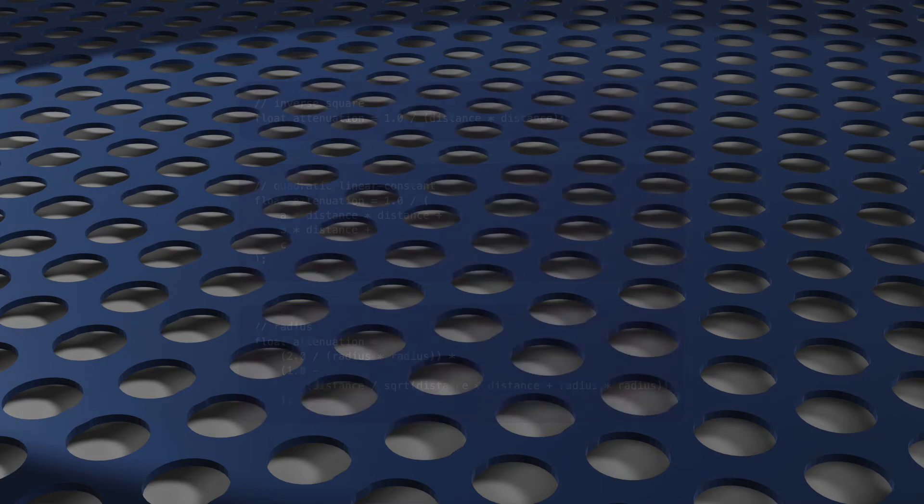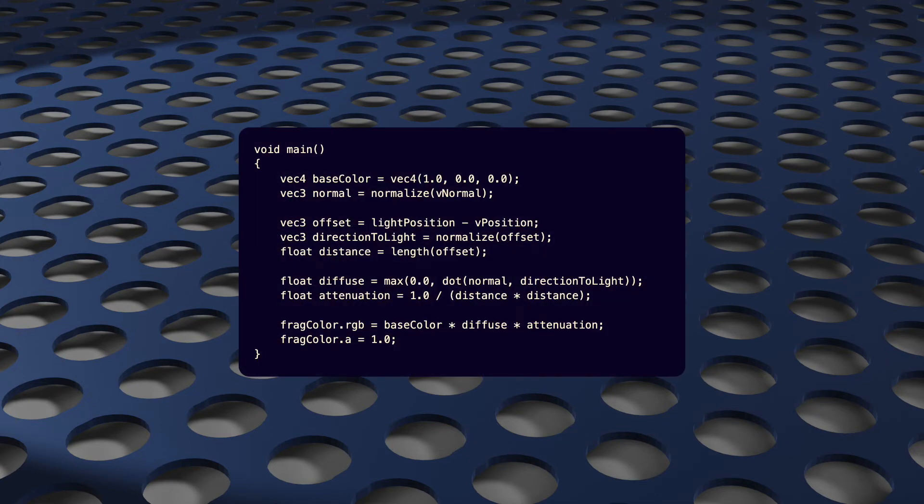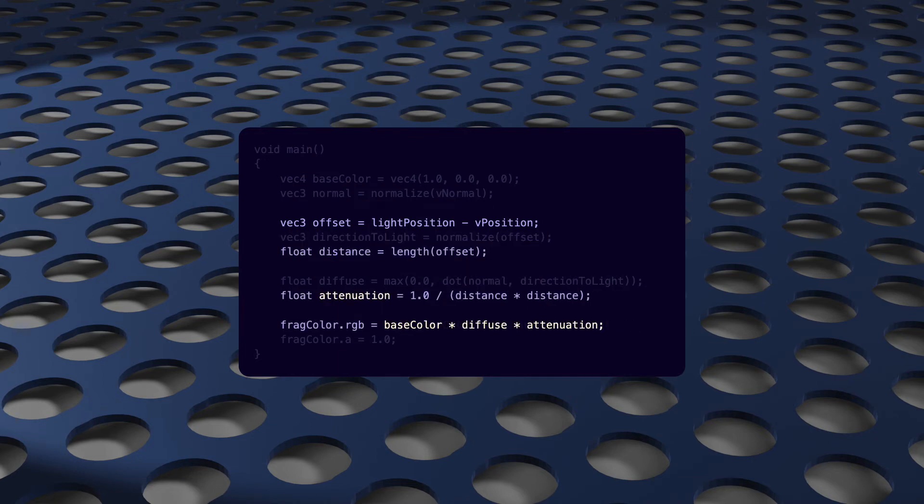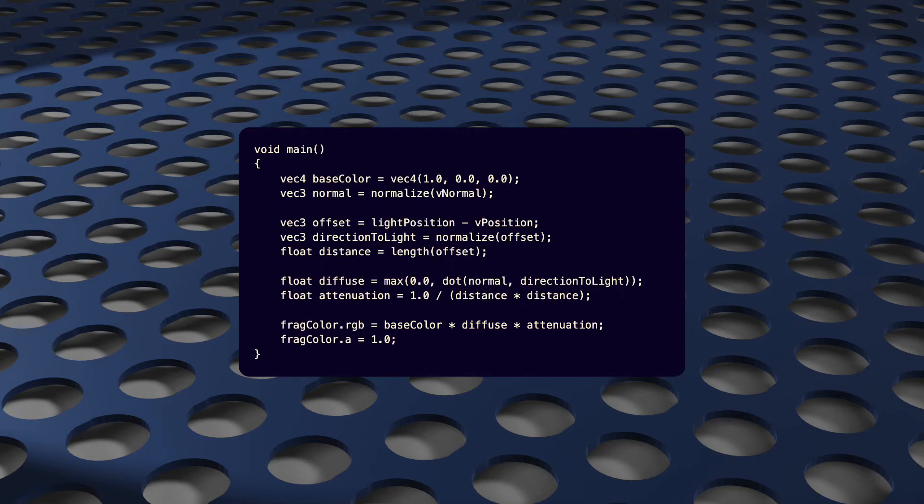Anyway, once we've chosen our attenuation function, it's time to bring everything together. And we do that by just using our new direction variable in our diffuse brightness calculation and multiply the result by our attenuation value. So our final GLSL code for point lighting looks like this.